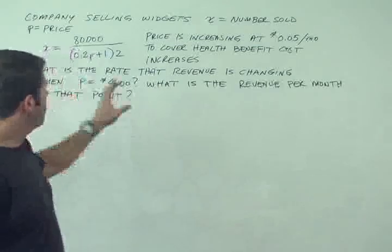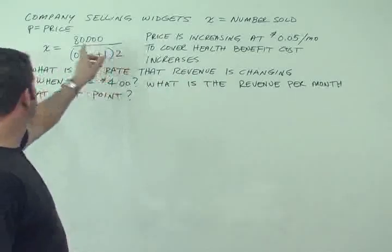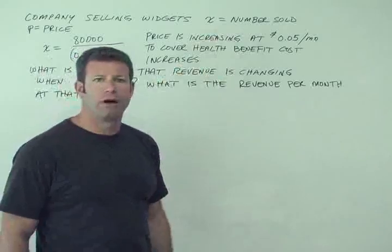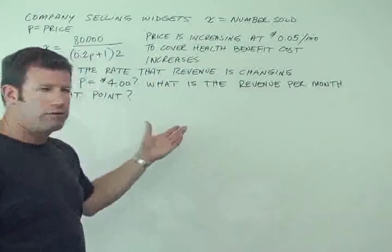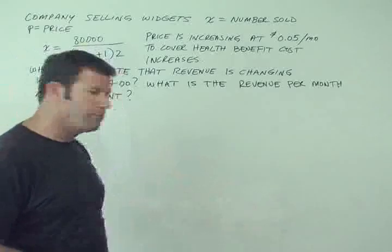So now it didn't specifically state it in the problem statement, but we have to assume that this number sold x must be number sold per month, right? And so that would then allow us to solve this second question. Otherwise we would have no way to solve it. So we'll make that assumption.